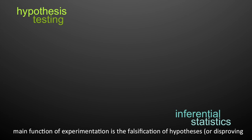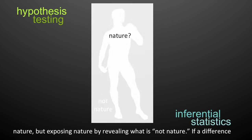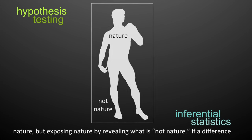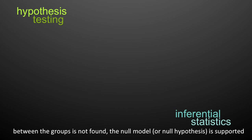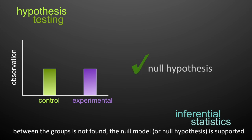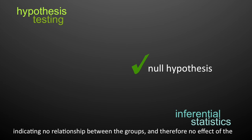The main function of experimentation is falsification of hypotheses — disproving hypotheses — not proving them. In this manner, scientists are not revealing nature, but exposing nature by revealing what is not nature. If a difference between the groups is not found, the null hypothesis is supported, indicating no relationship between the groups and therefore no effect of the experimental treatment.